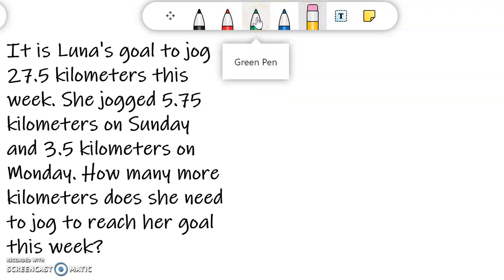So the first thing I want to do is go back into the problem and identify the beginning, middle, and end and circle my key words or clue words and important numbers. So in the beginning of the problem, Luna has a goal to jog 27 and 5 tenths kilometers this week. Okay, so I'm going to circle 27 and 5 tenths. That's in the beginning. That's her goal.